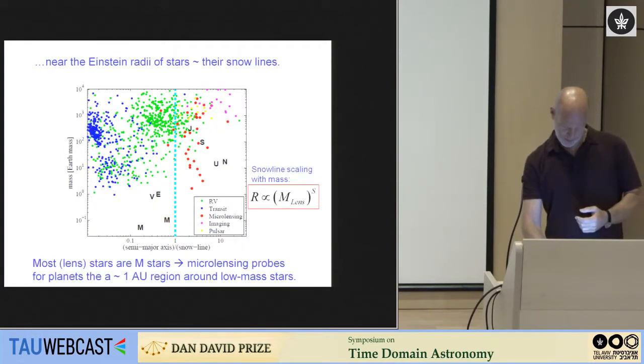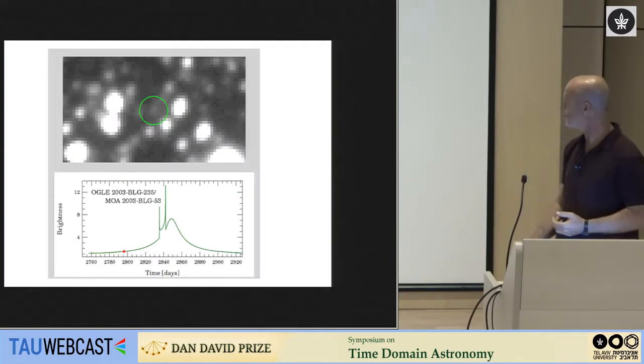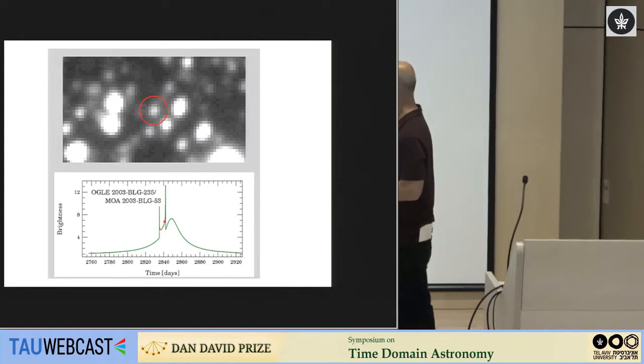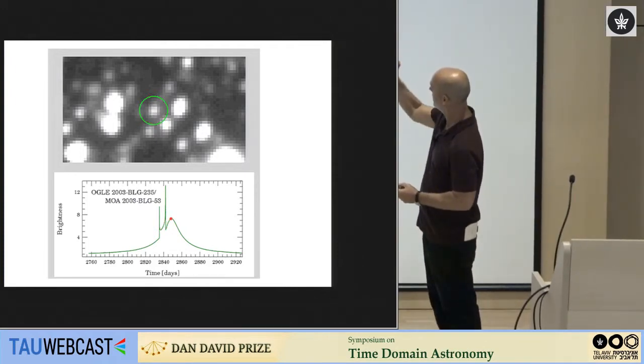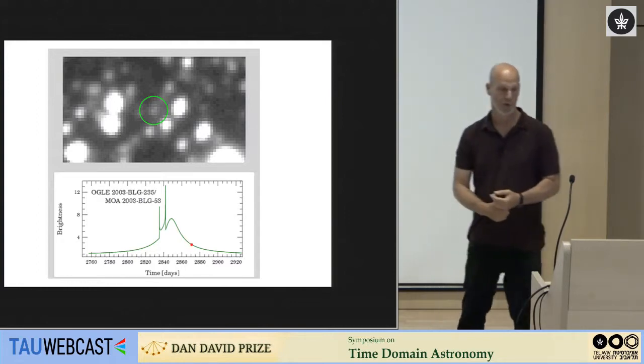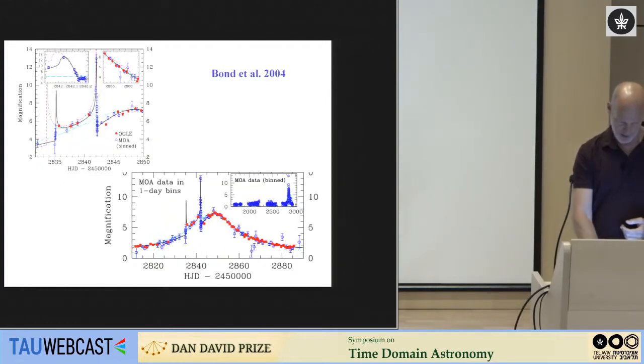So in our solar system this corresponds to about 5 AU, but most microlensing host stars are M stars, simply because those are the most common stars in our galaxy. And so microlensing basically probes for planets in about a 1 AU region around low mass stars. So this is a very unique part of parameter space that's probed especially by microlensing. It's very complementary to the other methods.